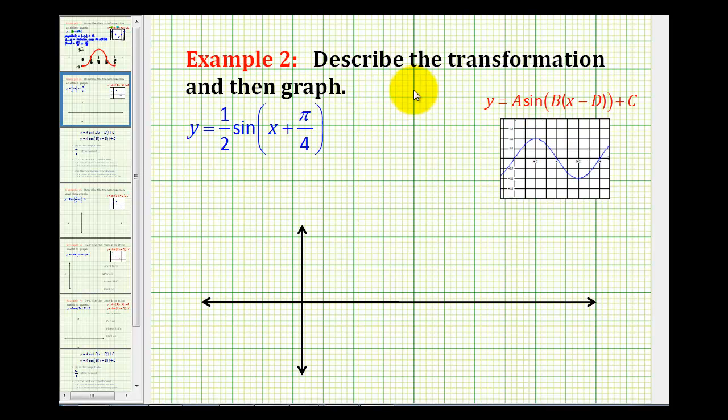Welcome to a second example of describing and then graphing a trig transformation. Here we have y equals one-half sine of the quantity x plus pi over four.